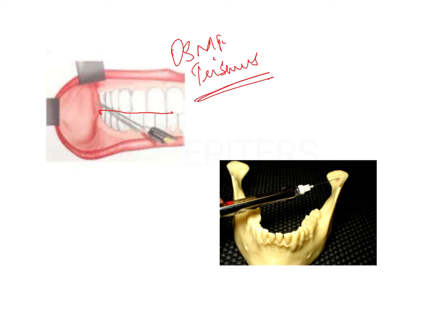Even after using the conventional technique, a major disadvantage is that the inferior alveolar vessels run alongside the nerve, creating a high chance of hematoma formation in that region. To avoid this, you can give the nerve block at a higher level where the nerve is present primarily but the blood vessels are not. This reduces hematoma formation, and that technique is the Gaugage technique.